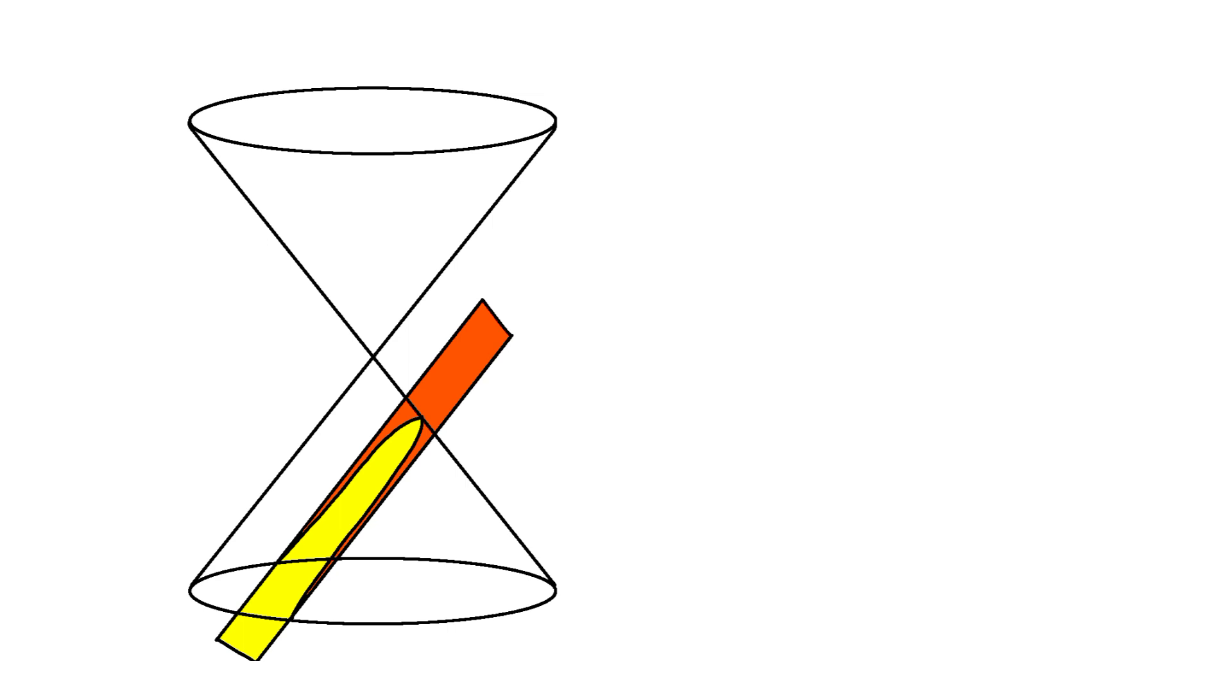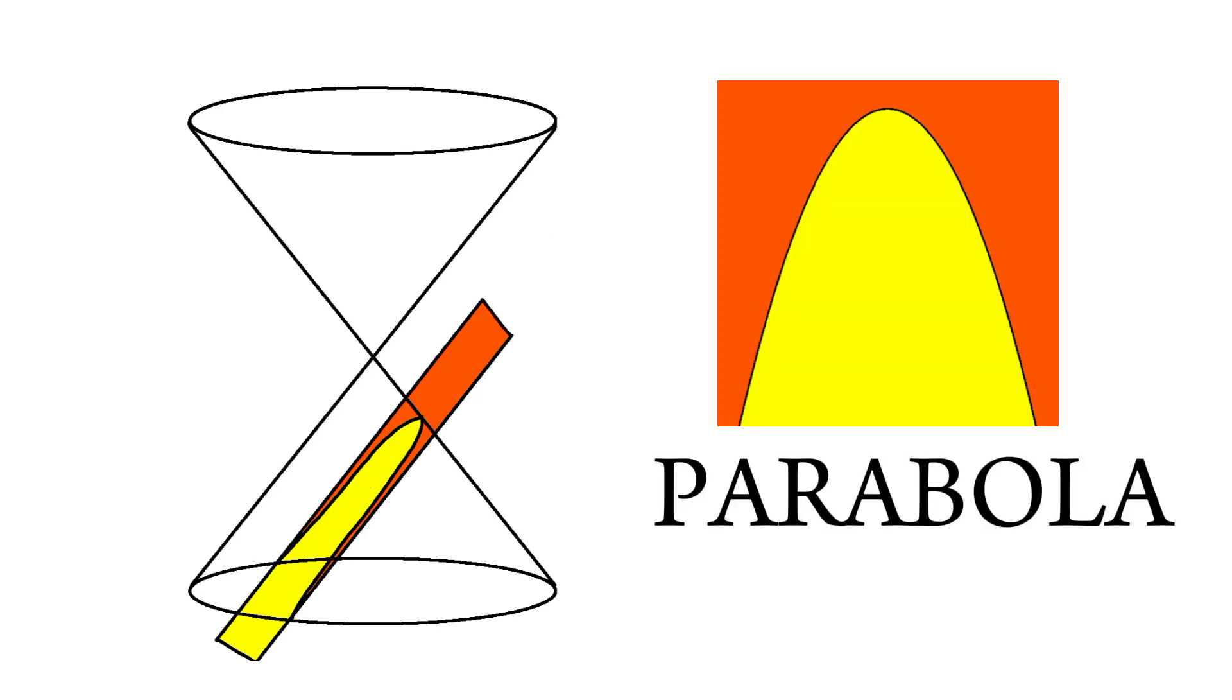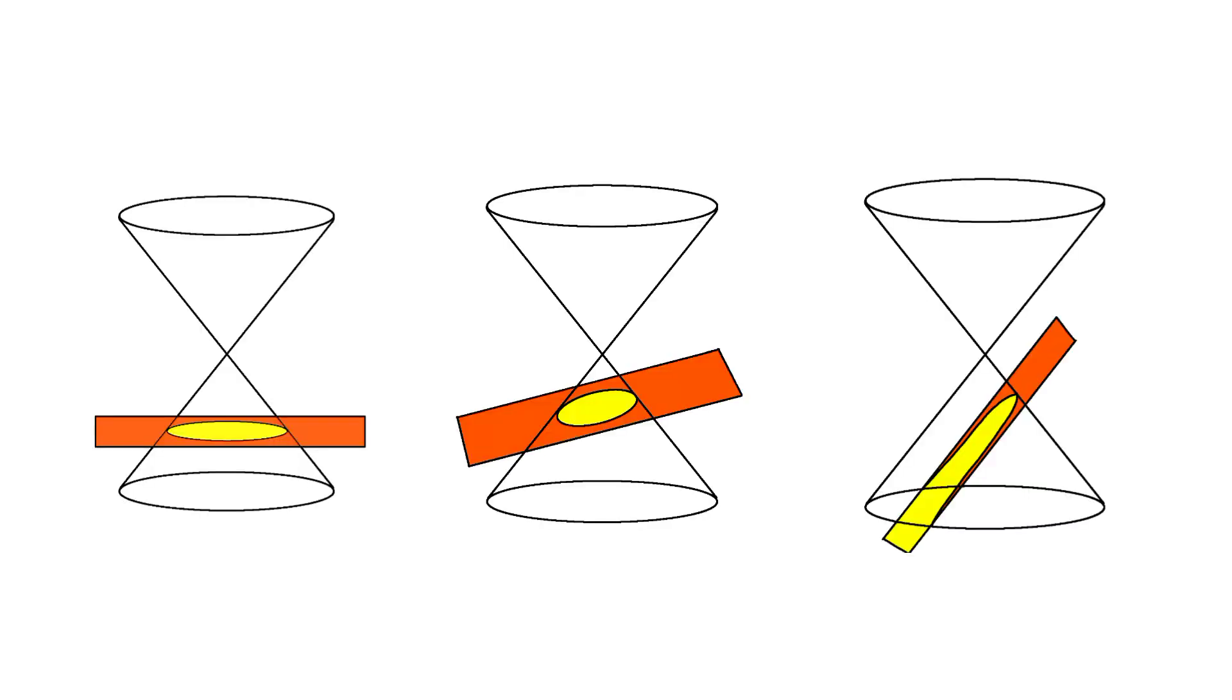If you intersect the plane such that the plane is parallel to the slope of the cone, you could create a parabola. Parabola has an eccentricity of one. All of the aforementioned curves have their plane only intersect at one cone.